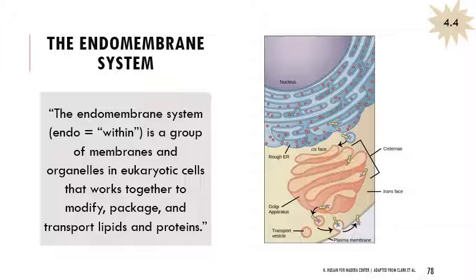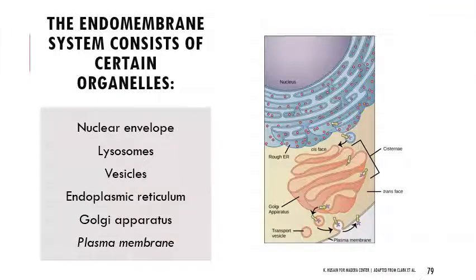Some of those organelles come together to make what's called the endomembrane system. It's a group of membranes and organelles in eukaryotic cells very important for lipids and proteins — they modify, package, and transport those fats and proteins. There are very specific organelles in the endomembrane system: the nuclear envelope, lysosomes, vesicles, the ER (rough ER and smooth ER), the Golgi apparatus, and the plasma membrane. You should know that the endomembrane system is important for packaging, modifying, and working with lipids and proteins. You don't need to know every single part of it.